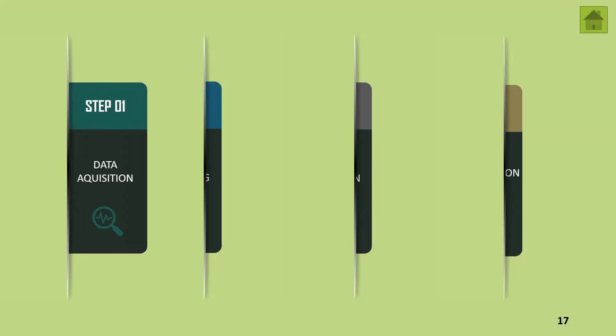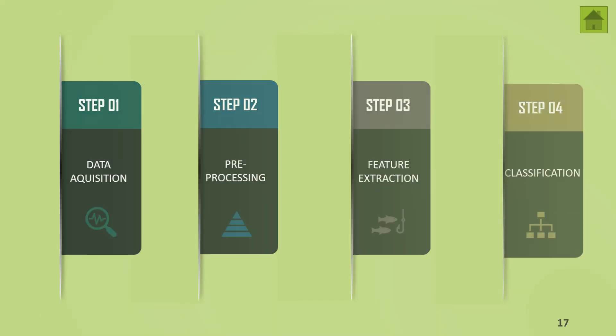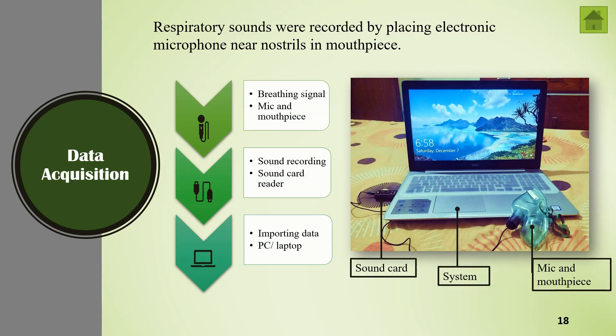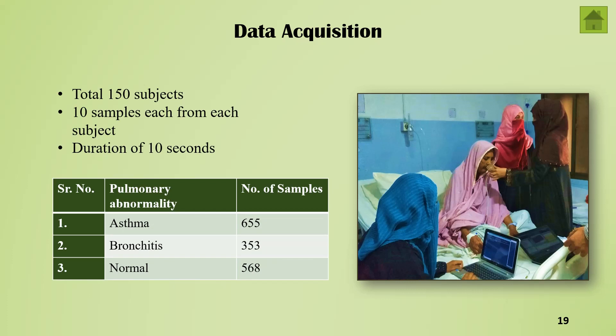Talking about the methodology, there are four main steps: data acquisition, pre-processing, feature extraction, and classification. For data acquisition, I used a mic and mouthpiece to record the breathing sound by placing it near the nostrils. You just need a mic, a sound card, and an operating system, and you are good to go. Here is the visual representation of how we collect this data. There were 150 subjects — 50 asthma, 50 bronchitis, and 50 normal — and I collected 10 samples from each subject, each 10 seconds long. The number of samples are: asthma 655, bronchitis 353, normal 568.